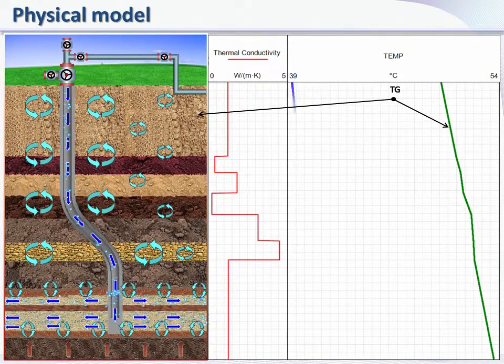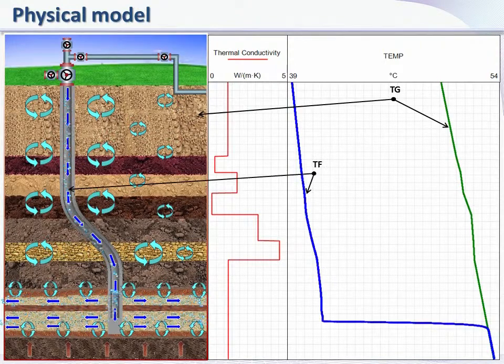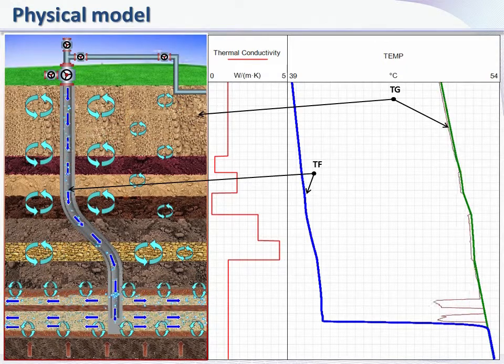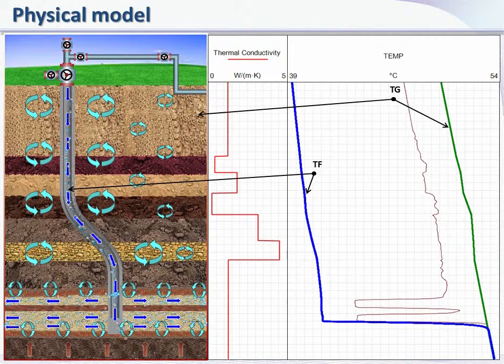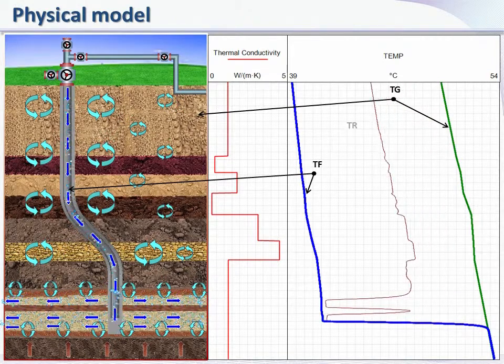Temperature in the wellbore under flowing conditions diverges greatly from the geothermal temperature profile. In response to injection, temperature in rocks and reservoir changes gradually from the initial geothermal temperature profile.